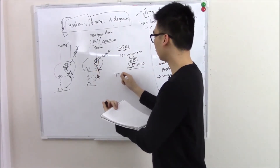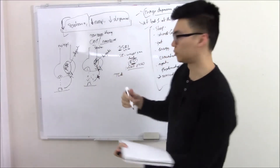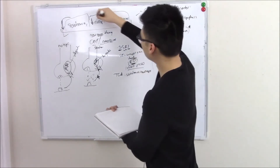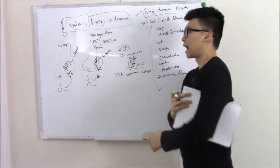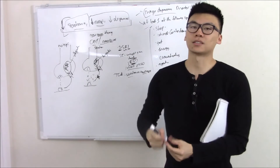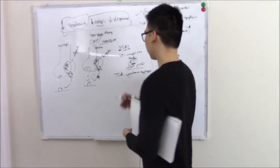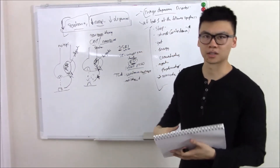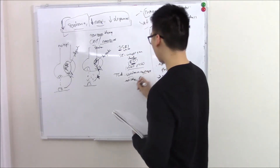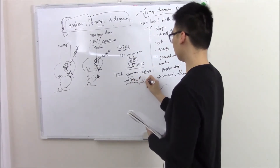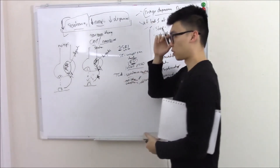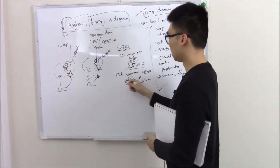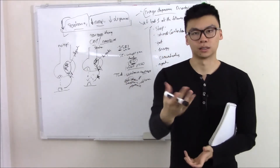Next up are tricyclic antidepressants, which also block reuptake — they block both serotonin and norepinephrine reuptake. However, they've fallen out of favor because of a really bad side effect profile. They cause anticholinergic effects: dry mouth, blurry vision, constipation, urinary retention. They can also cause heart arrhythmias and precipitate delirium. However, sometimes we can use the side effect profile to our advantage — imipramine, a strong anticholinergic that causes urinary retention, can be used at a lower dose for bedwetting in kids.